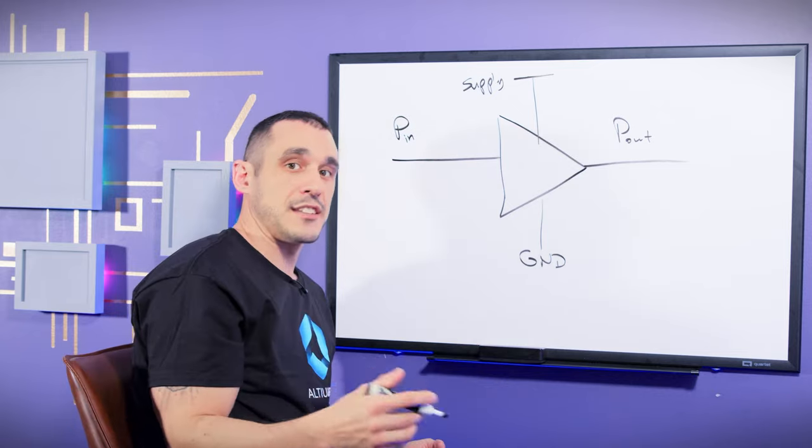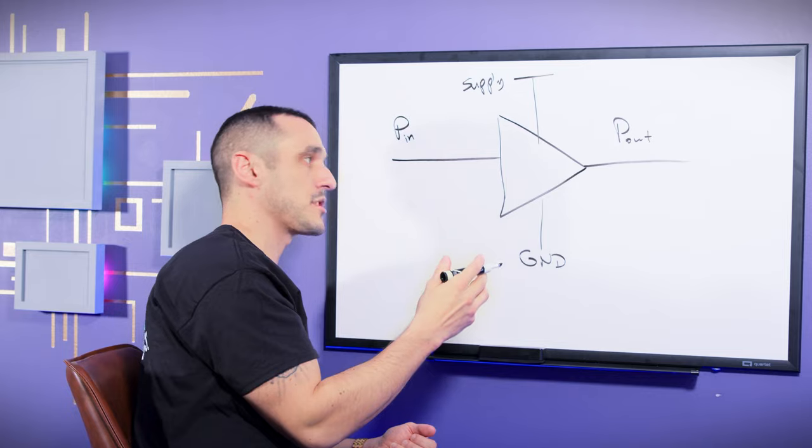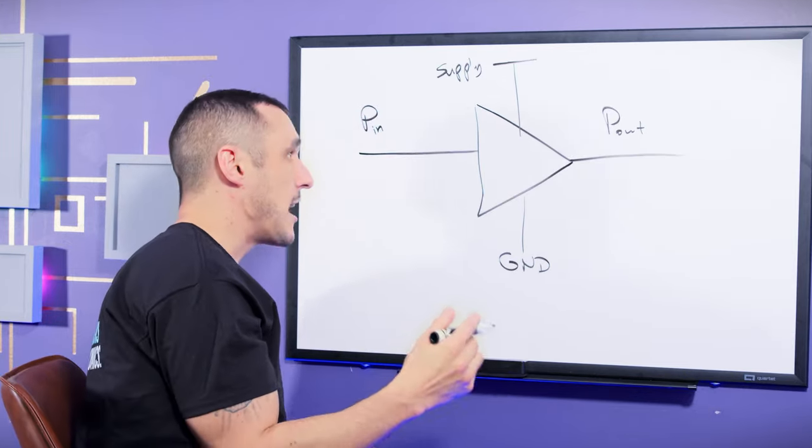Of course, on the component, you can have a digital interface because maybe that interface is going to allow you to configure something like the phase, or maybe the gain is programmable.